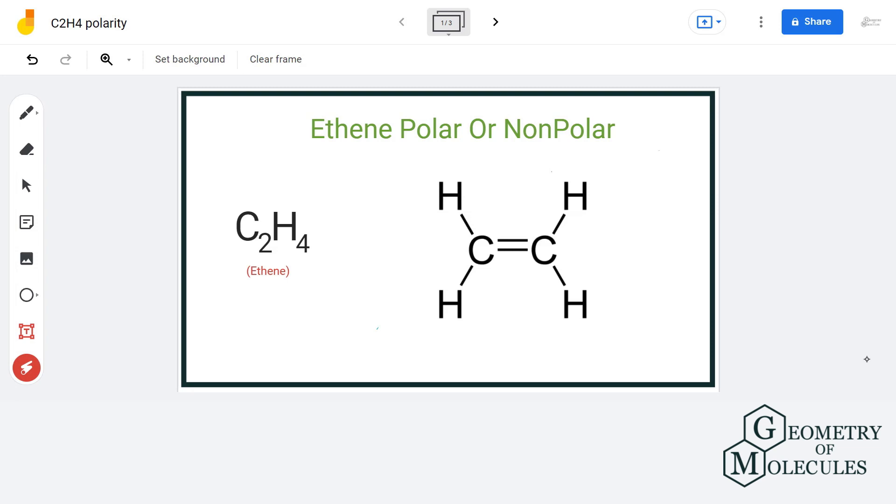Hi guys, welcome back to our channel. In this video, we will discuss the polarity of ethene molecule, that is C2H4. Ethene is a hydrocarbon, meaning that it is made up of hydrogen and carbon atoms.